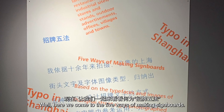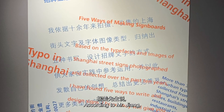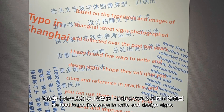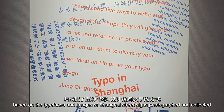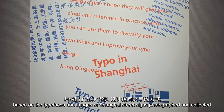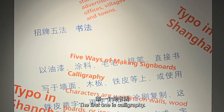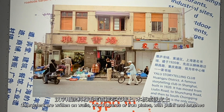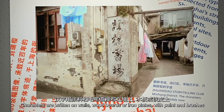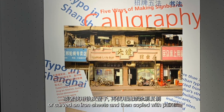Here we come to the five ways of making signboards. According to Mr. Jiang, he has found five ways to write and design signs based on the typefaces and images of Shanghai street signs photographed and collected over the past two years. The first one is calligraphy. Characters are written on walls, wood boards, or iron plates with paint and brushes, or carved on iron sheets and then copied with paint.